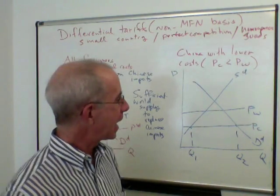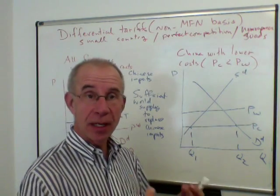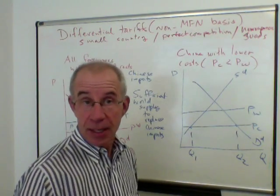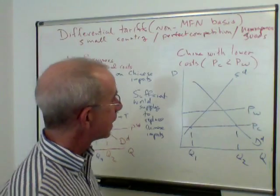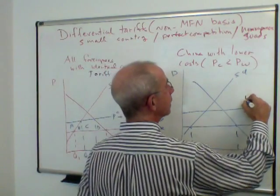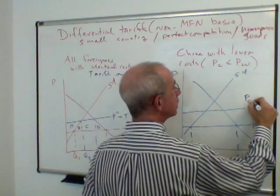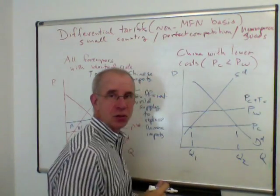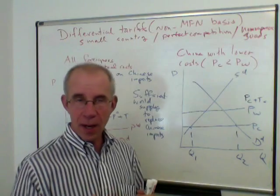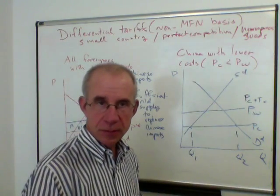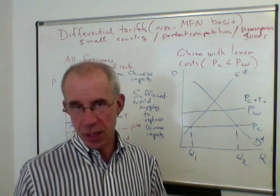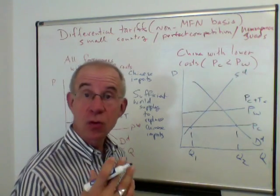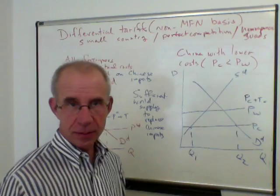This is one instance where the tariff can simply displace or reorganize who imports, but doesn't affect domestic consumers and producers. Now consider a different situation where the Chinese had lower costs than the rest of the world, so that initially all imports were coming from China — which is often the case in some markets today. In that case, the higher world price means other foreigners aren't participating in the U.S. market, and increasing tariffs on the Chinese can have an impact.